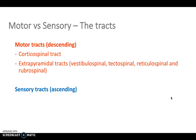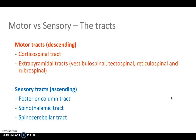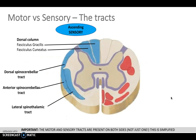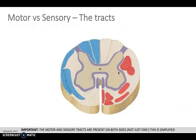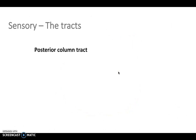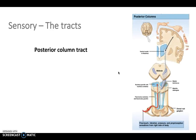Motor tracts are your corticospinal tract and your extrapyramidal tracts, and sensory tracts are your posterior column or dorsal column medial lemniscus, your spinothalamic, and your spinocerebellar. You've got the sensory fibers on one side and the motor fibers on the other — both are present on both sides; they're shown on one side here to make it clearer.